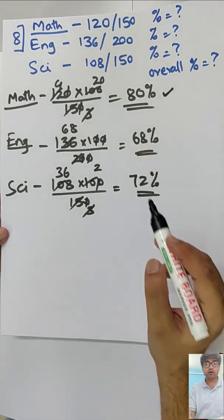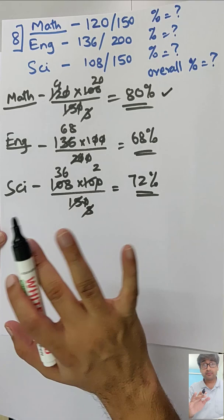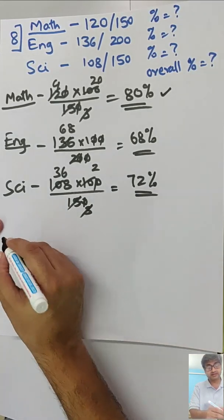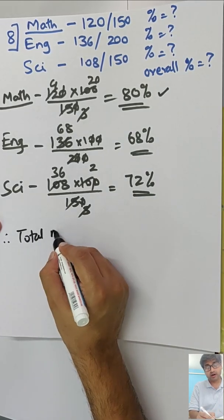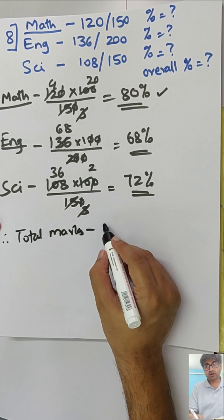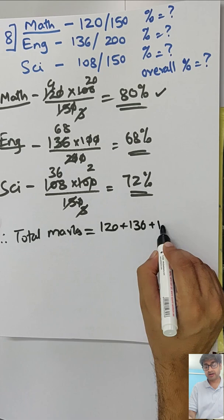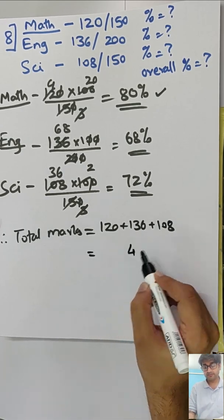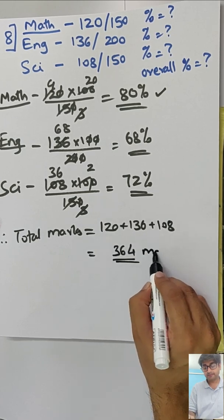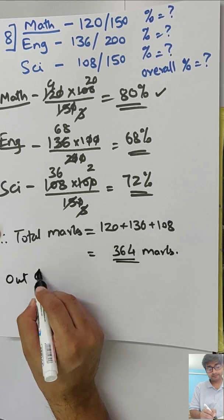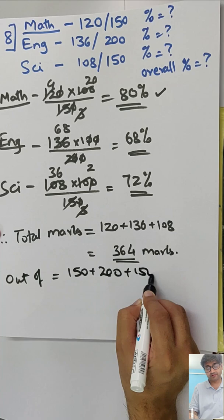For total overall percent, first we will calculate total marks that the candidate has got. He's got 120 plus 136 plus 108, so 364 marks out of 500.